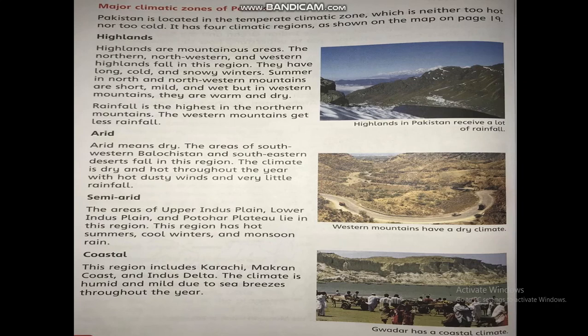Coastal: This region includes Karachi, Makran Coast, and the Indus Delta. The climate is humid and mild due to sea breeze throughout the year.